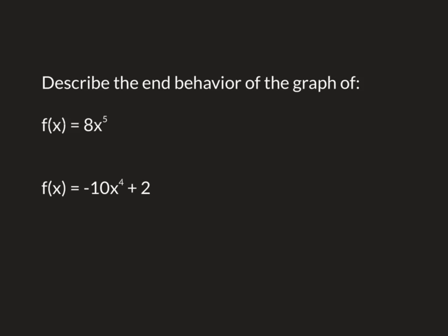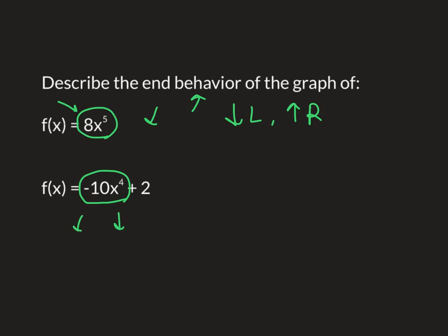Now describe the end behavior — they're going to have you look at the function and describe what's going on. This one is odd degree, which means you're going opposite directions, and the eight is positive. Odd positive does this: it goes down left, up right. You can write it as 'down left, up right.' The second example has the leading term negative 10x to the fourth — it's even, so both ends do the same thing. Because it's negative, both ends are going down: down left, down right. Remember, this is only the ends of the graph, affected by the degree and the sign of the leading coefficient.